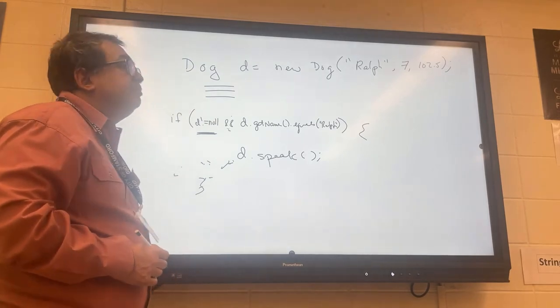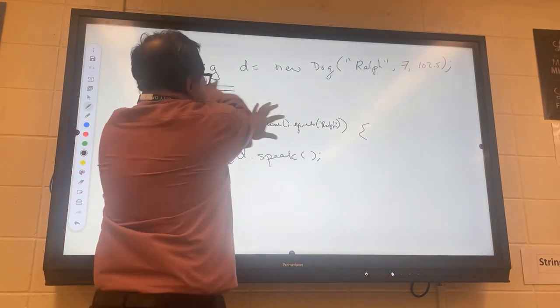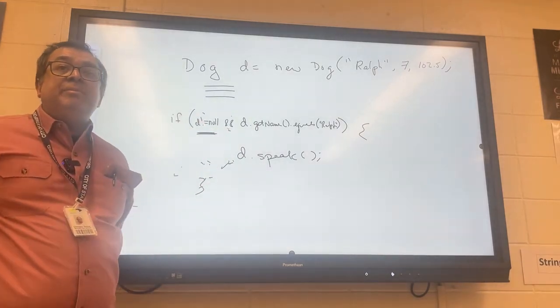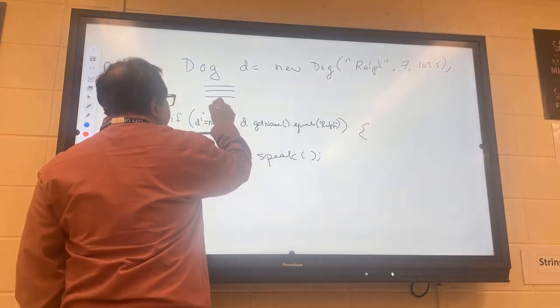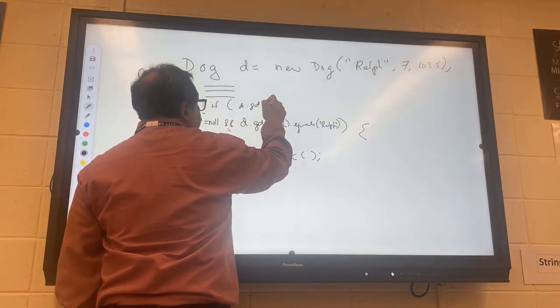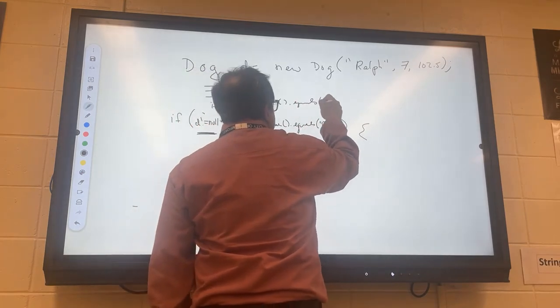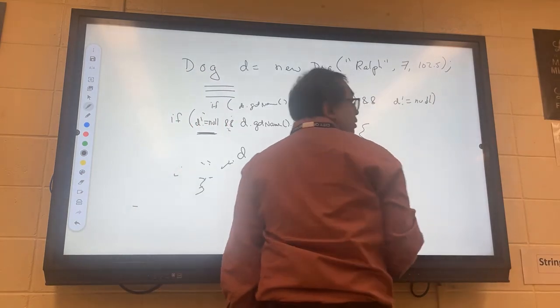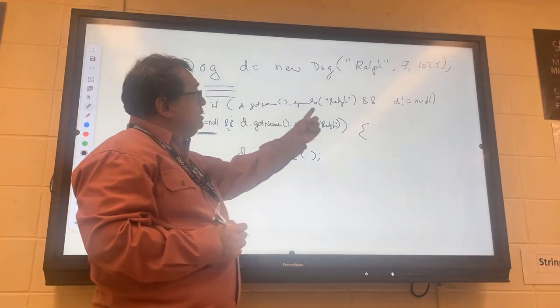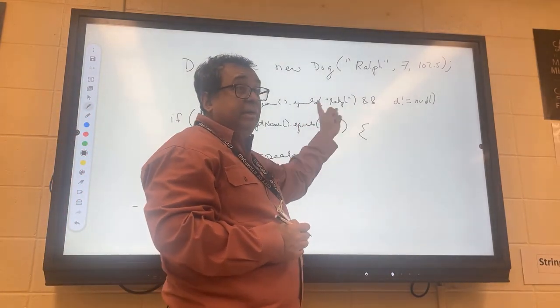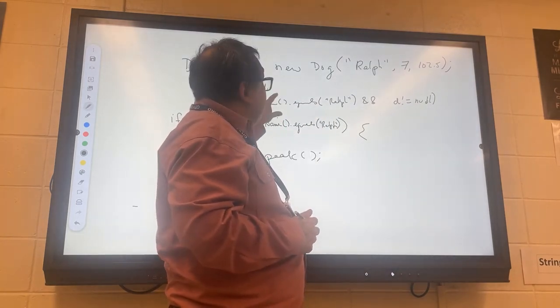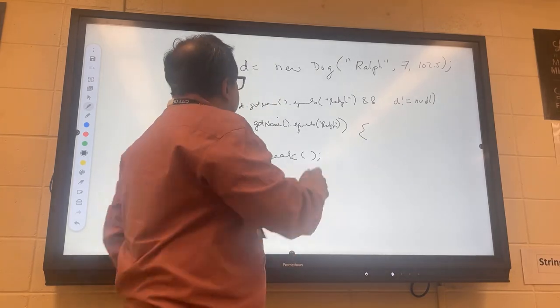Here's my other question for you. Would it be okay if I wrote this with the two clauses of the end statement reversed? Would that be okay? Like could I write if D dot get name equals Ralph and D not equal to null? Would that work just as well? What do you think, Mr. Gruffalo?